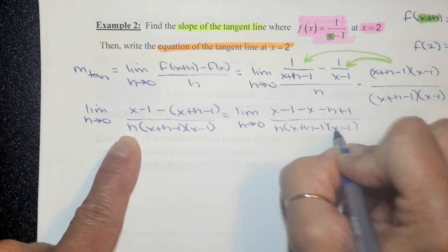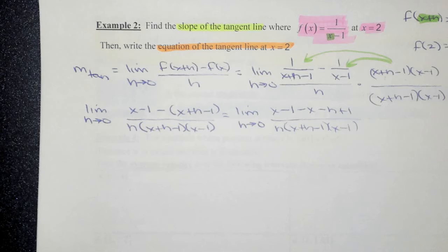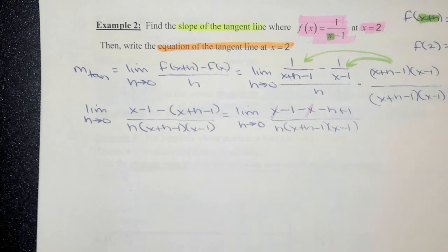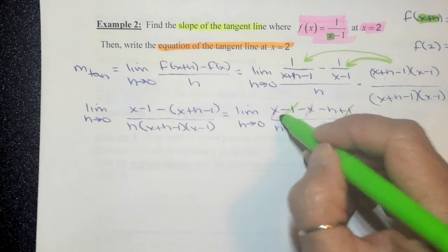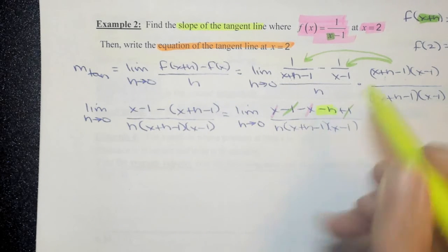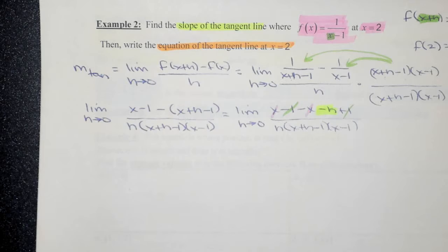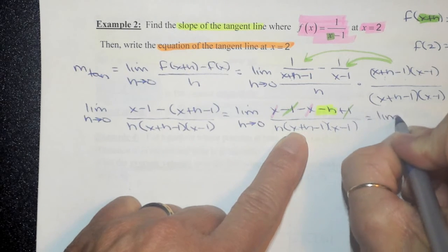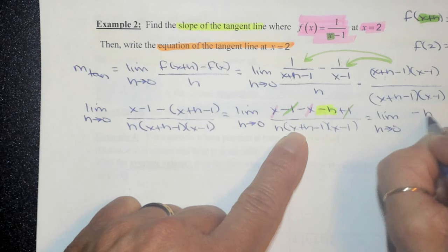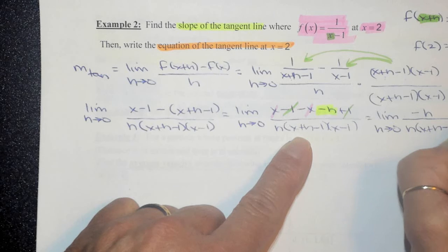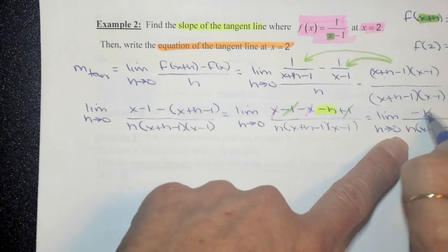These problems are designed so that terms in the numerator without an h cancel out. The positive x and negative x cancel, and the positive 1 and negative 1 cancel. That leaves negative h in the numerator and a factor of h in the denominator, which allows us to reduce.